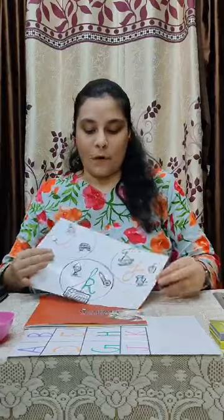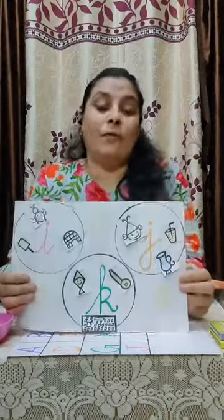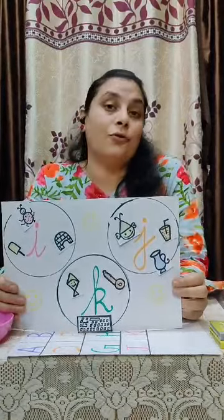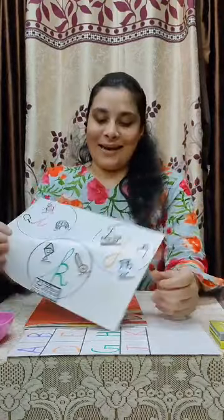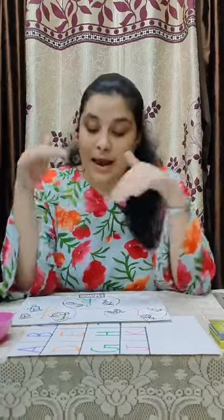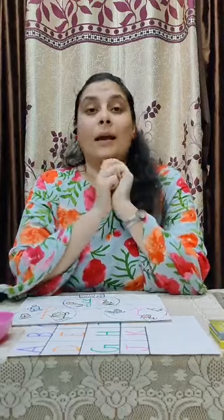So we have done this activity in which we sort out the pictures related to each letter. You can also perform this activity at your home — it will help you in sorting out different things. I have drawn very easy pictures so that your parents can draw them at home easily. This activity will help you in learning more than two objects related to these letters. In our whole session we are going to learn five pictures related to each letter.